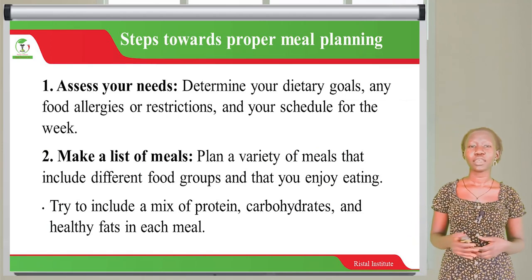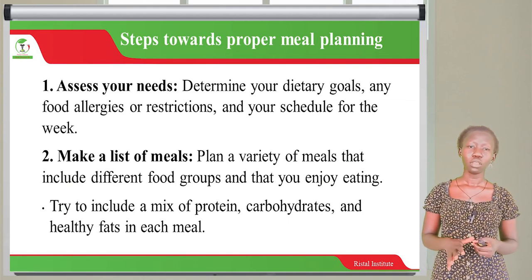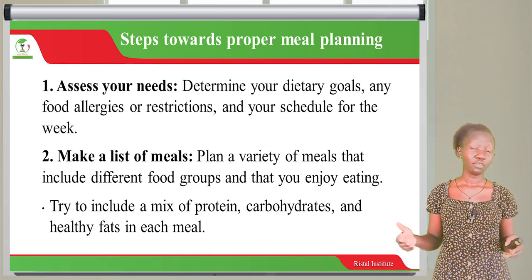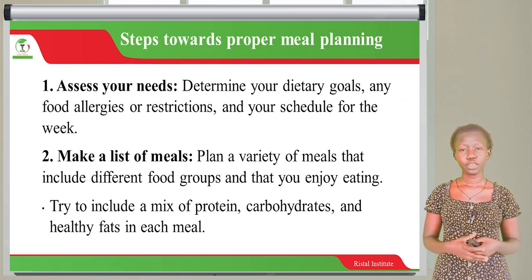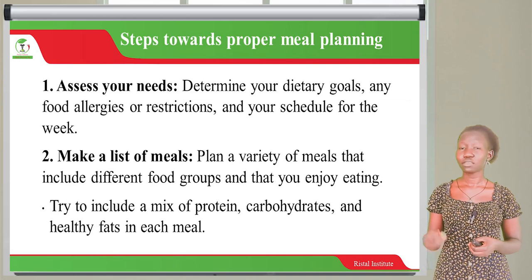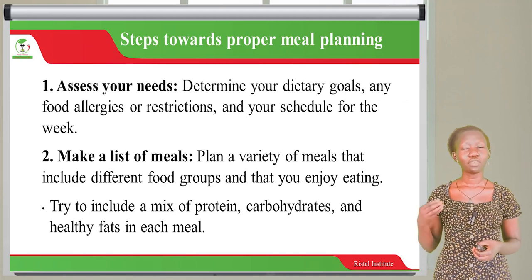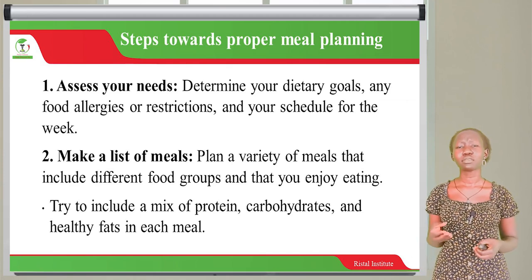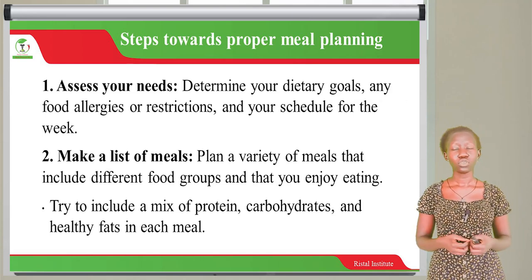The different steps towards proper meal planning: first, you have to assess your needs. Assessing needs involves examining your dietary goals — for example, whether you have any food allergies or restrictions — and then making a schedule for the week listing the food items you want to consume. After assessing your needs, you have to make a list of meals, planning a variety that includes different food groups and foods you enjoy eating.